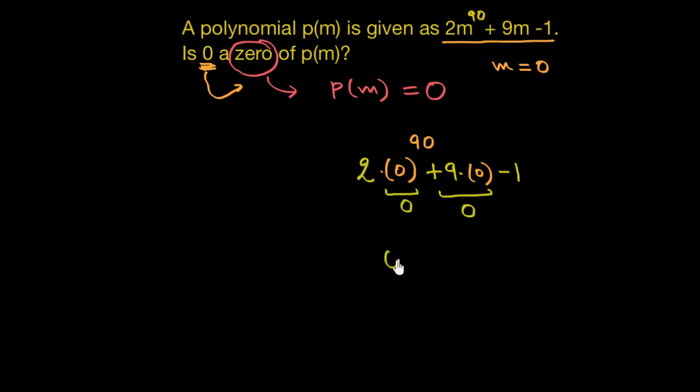2 times 0 would give us 2, sorry not 2, 0. 2 times 0 is 0 plus 9 times 0 is again 0 minus 1.